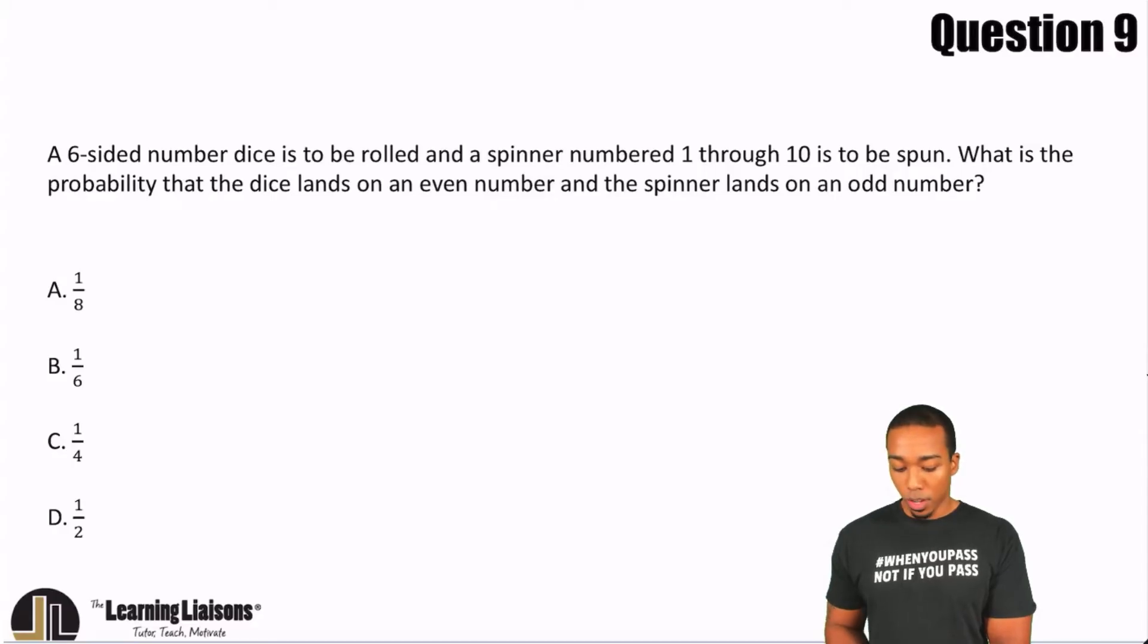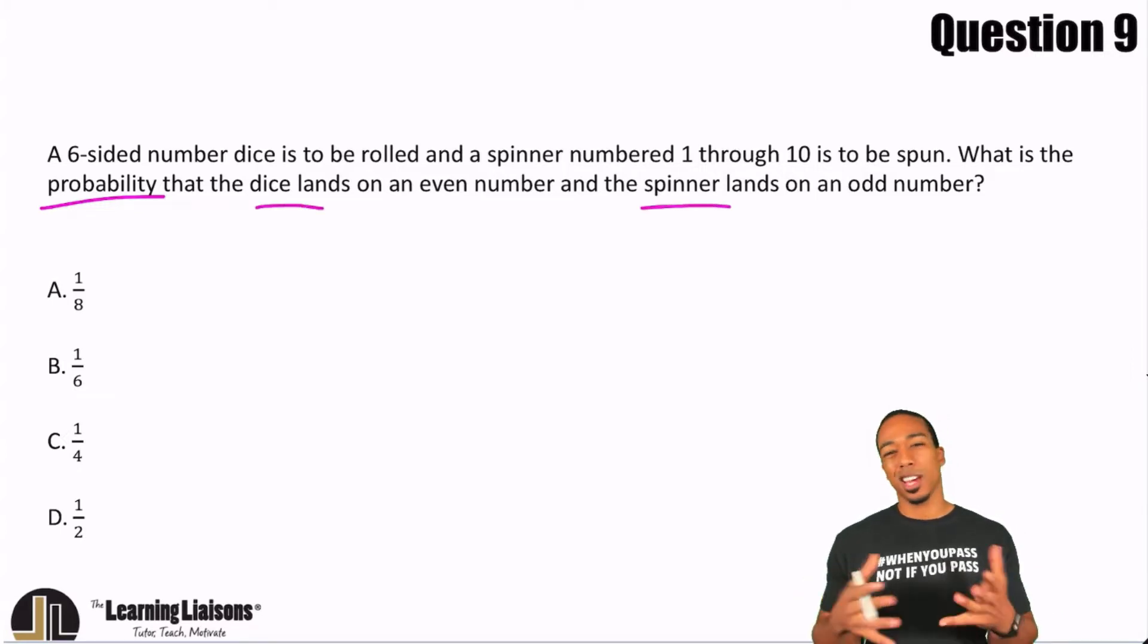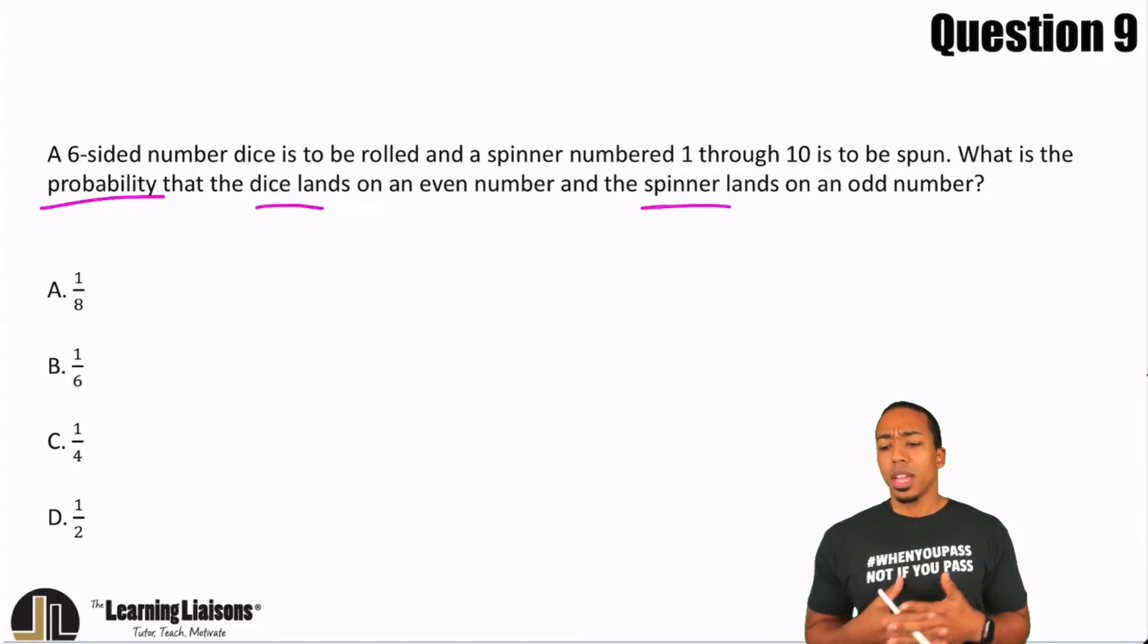We're looking for probability, right? And this is going to be a compound probability because we're looking for the dice and spinner separately, but the combined probability of each event happening together. So in order to compute this, we're going to use the compound probability rule, which means we just multiply those independent probabilities.